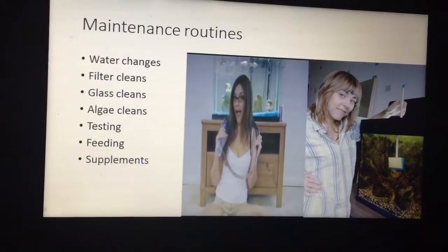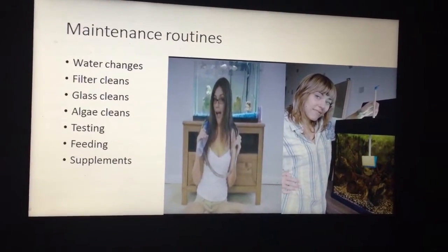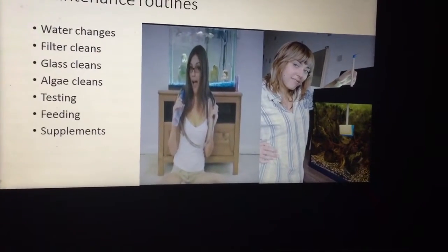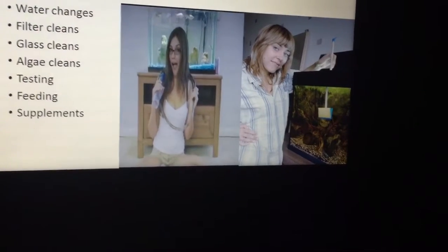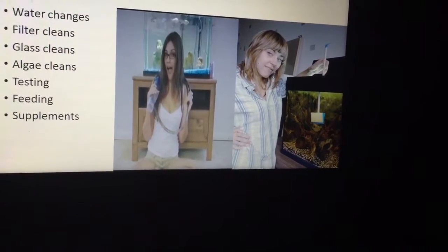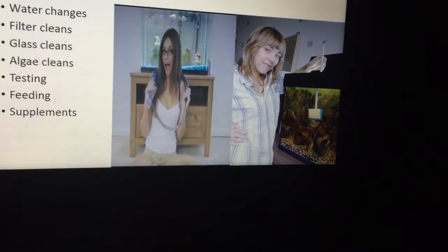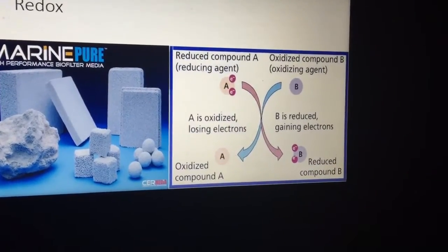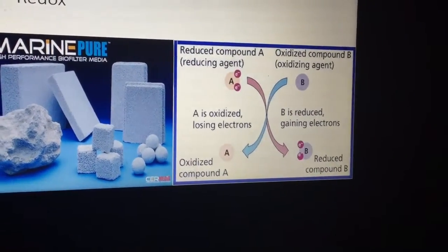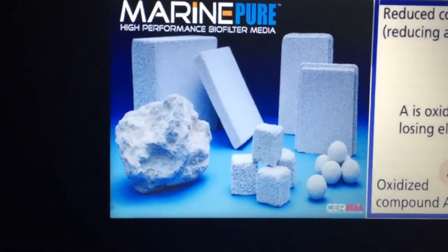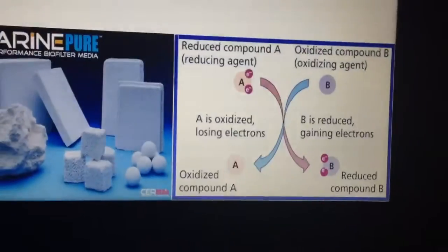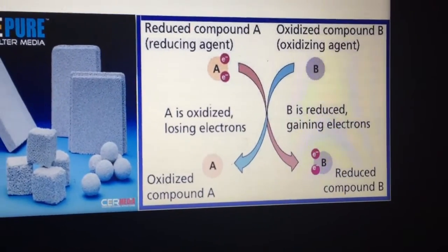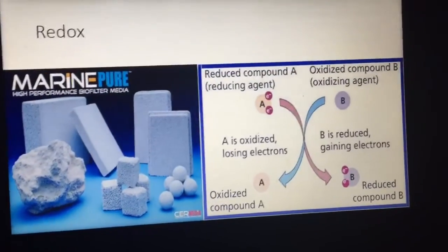Maintenance routines matter: how often you change the water, how often you clean the filters, how often you clean the glass, how often you algae clean, how often you test the water, how often you feed, and what supplements you add — all of these will have variants affecting which fish you successfully breed. Regarding redox, if you have good quality filter media your redox will tend to be higher. Understanding redox and how it works in regards to oxidization is definitely worth looking at.